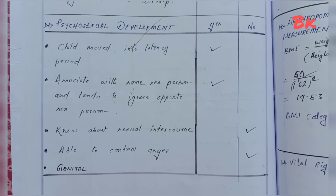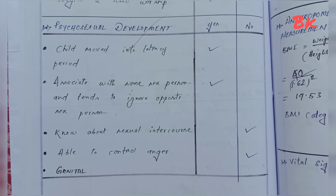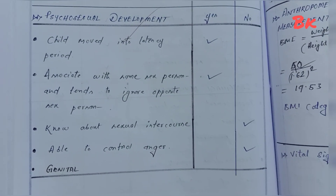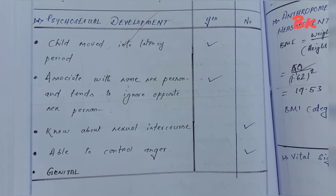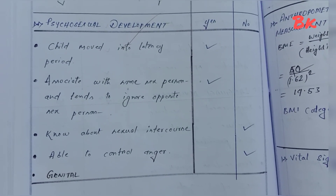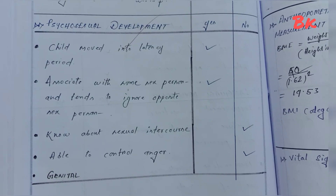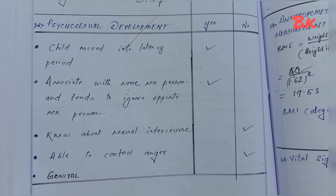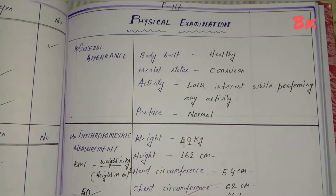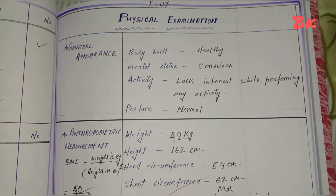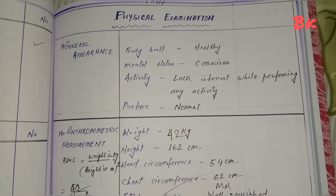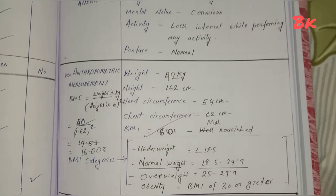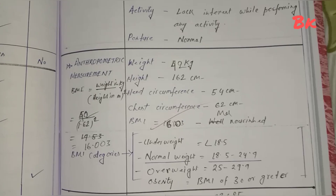Psychological or emotional development: curious about everything, peer-oriented, begins a hero worship phase. Psychosexual development: child has moved into latency period, associates with same-sex persons and tends to ignore opposite-sex persons, knows about sexual intercourse, and is able to control anger. Physical examination: general appearance, body build, mental status, activity, and posture.